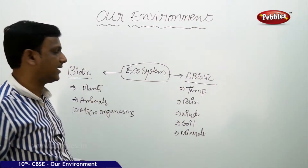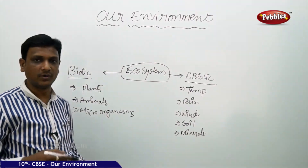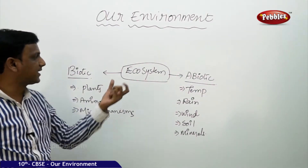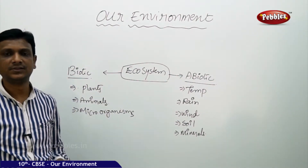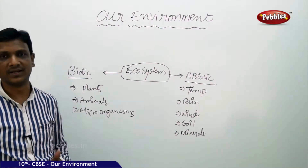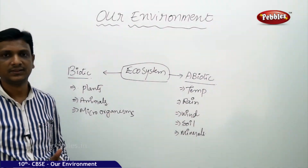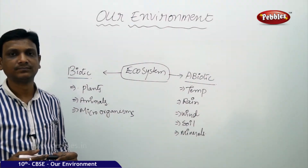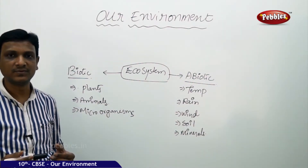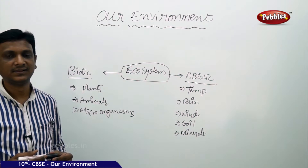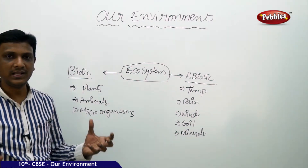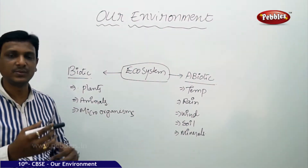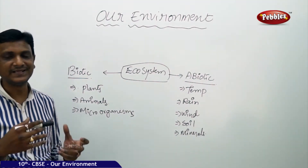You have already studied about ecosystem. Ecosystem is comprised of biotic and abiotic components. It is a part of the environment — a self-sustainable unit in which an organism can live completely throughout its life. All the biotic and abiotic components of an ecosystem interact with each other and maintain a balance.